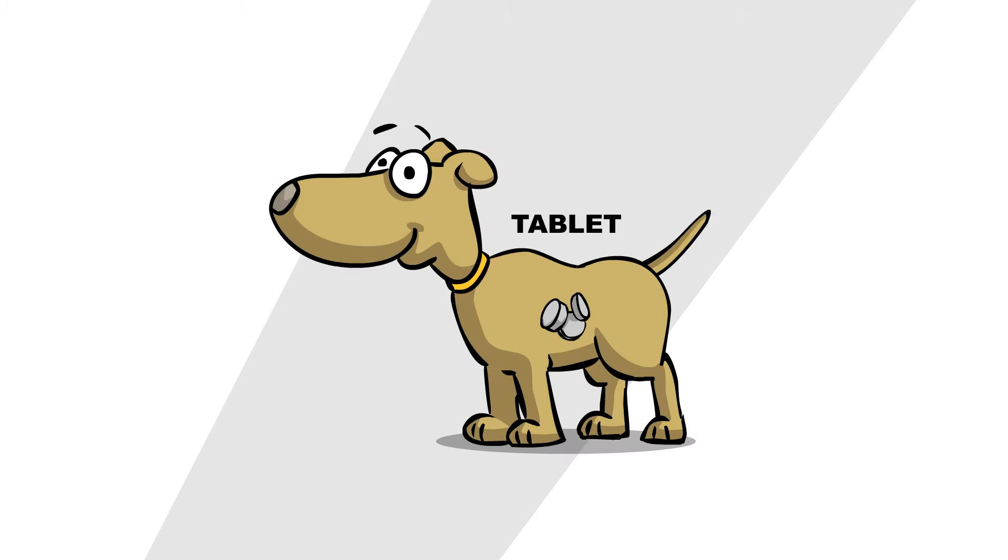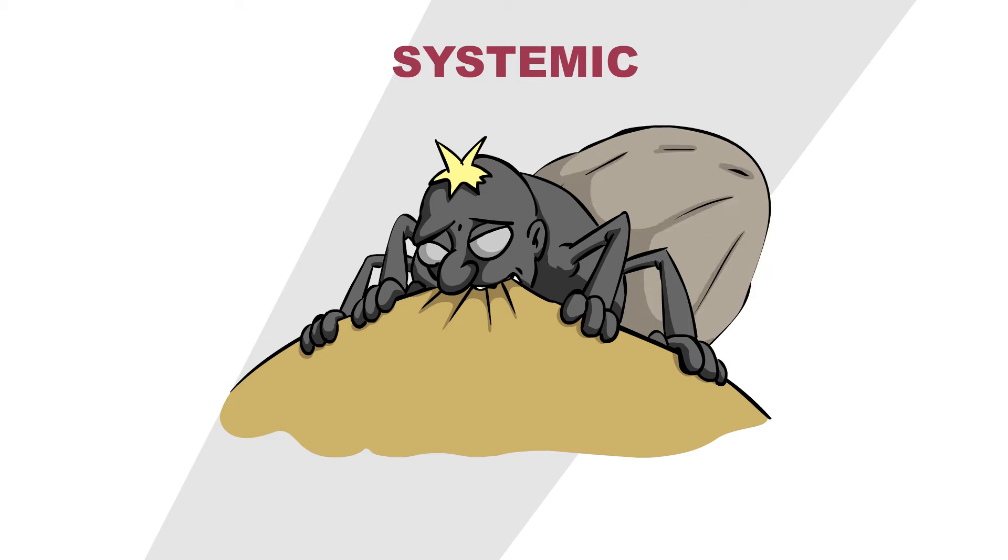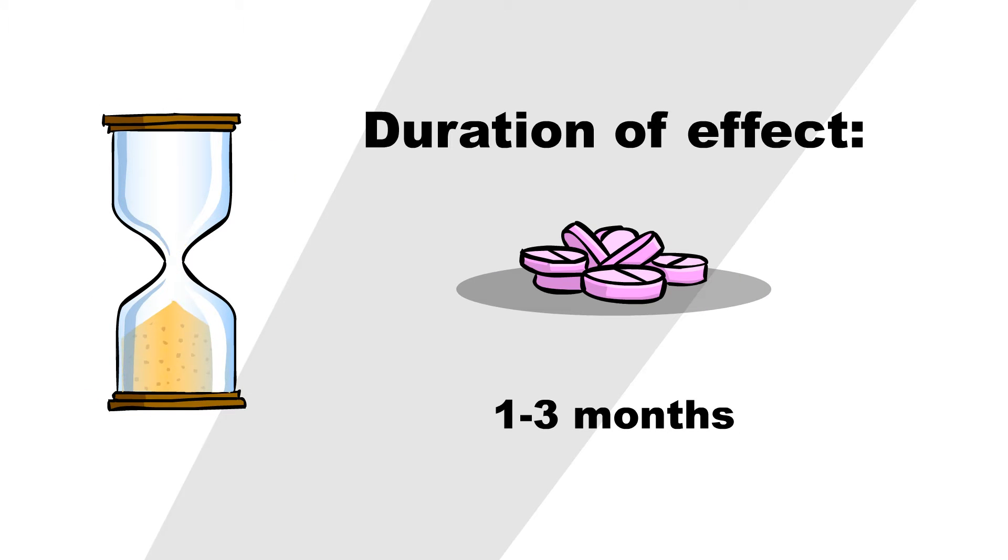Tablets, once ingested, affect the blood of the animal, i.e. the system. Since the active ingredient is not present on the surface, parasites get exposed to the drug when taking a bite. The protective duration of systemics is comparable to topically working spot-ons.